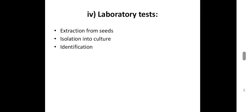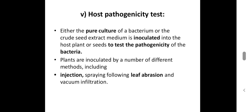Lab tests include seed extraction, then isolation into culture, then identification. Next is the host pathogenicity test. Here, the pure culture of the bacteria or seed extract is inoculated into the host plant or seeds to test the pathogenicity of the bacteria, that is the disease-causing ability. Plants are inoculated by a number of different methods: first, injection; second, leaf abrasion; and third, vacuum infiltration.